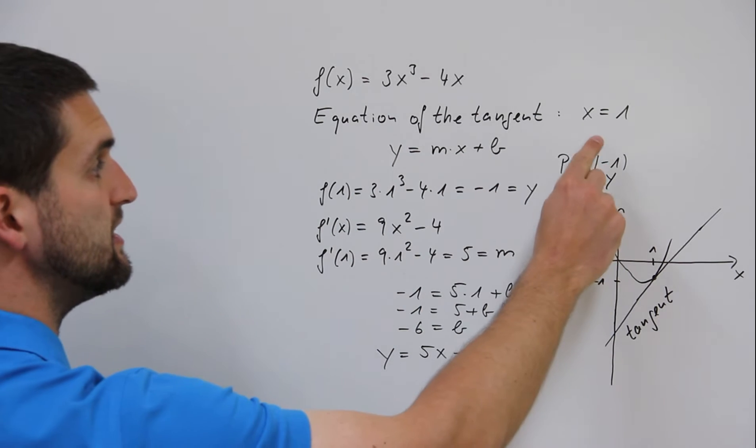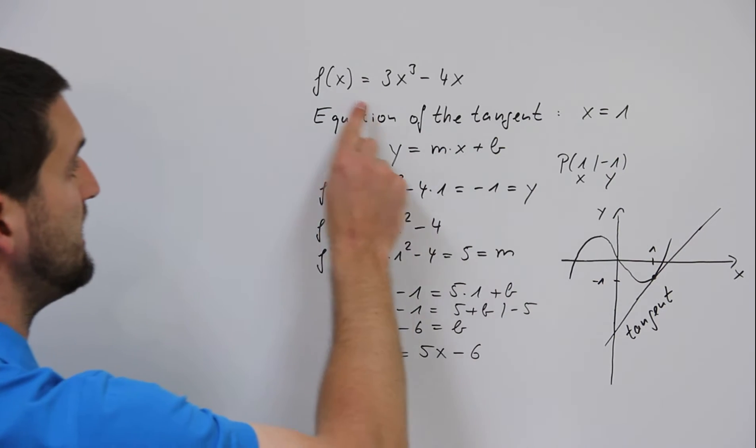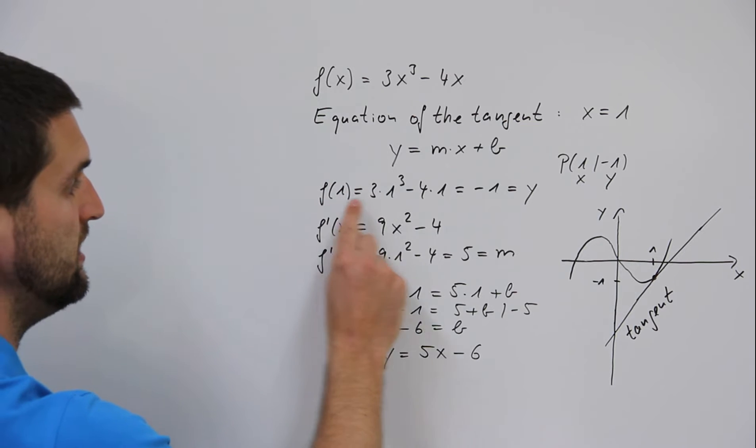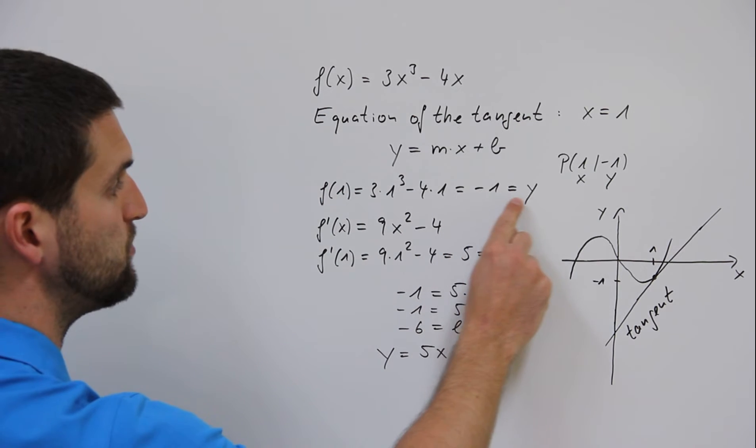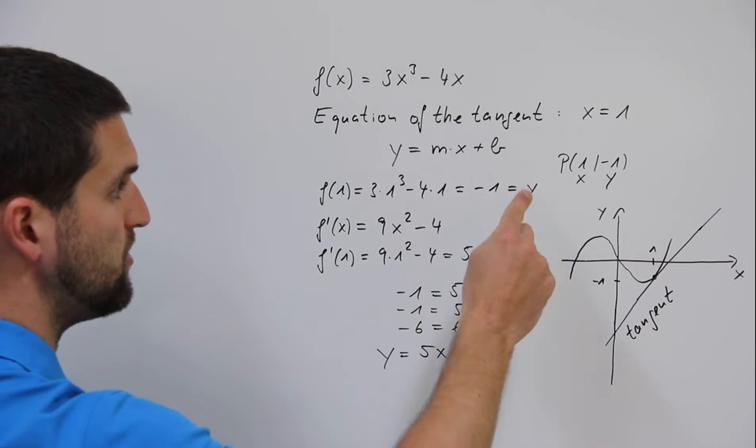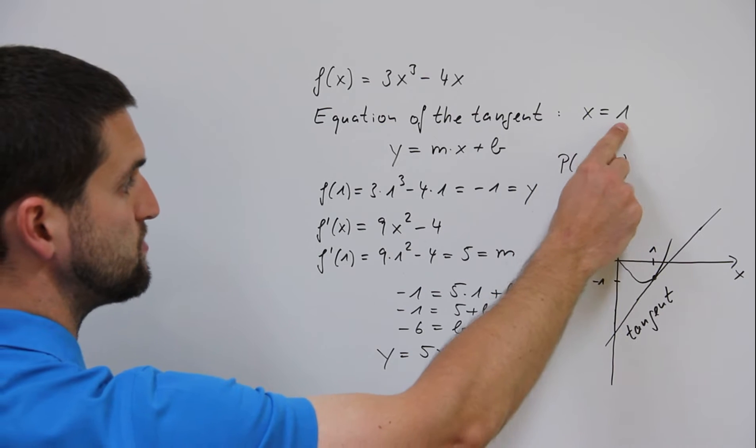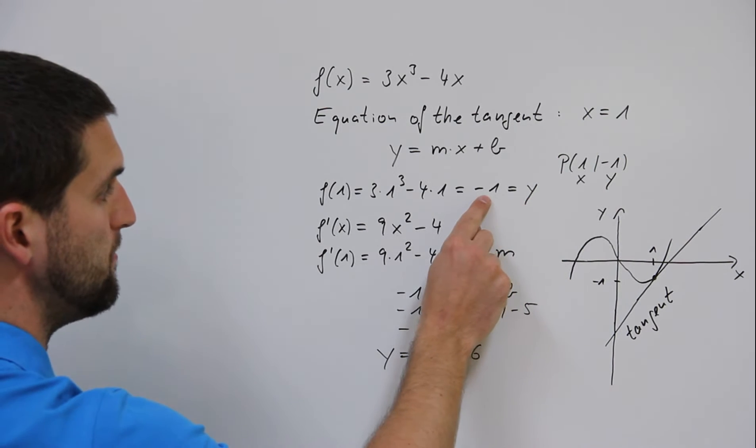First step you have to do is set in x equals 1 in f(x). f(1) equals minus 1 equals y. So far we have x equals 1, y equals minus 1.